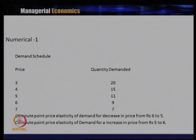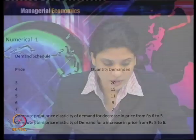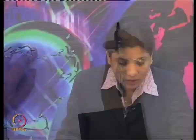The demand schedule is given here. When price is 3, quantity demanded is 20. When price is 4, quantity demanded is 15. When price is 6, quantity demanded is 9. When price is 7, quantity demanded is 7. We need to compute the point price elasticity of demand for a decrease in price from 6 to 5, and also compute the point price elasticity of demand for an increase in price from 5 to 6.